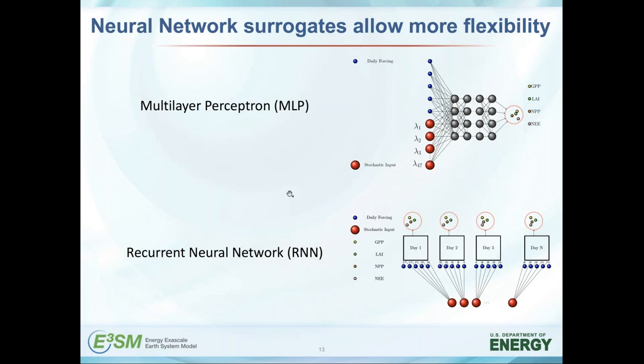This is joint work with Vishagan, a postdoc on the CIDAC project, where we are exploring neural network surrogates that allow more flexibility and accuracy. A benign multilayer feedforward neural network with 47 physical parameters and five daily forcing time series can be fit into a standard neural network with a few hidden layers to get outputs of interest and a relatively accurate approximation. But what works better is changing the architecture to include recurrent neural networks, which have worked well previously in time series tasks. RNNs do better than vanilla MLP multilayer perceptrons.